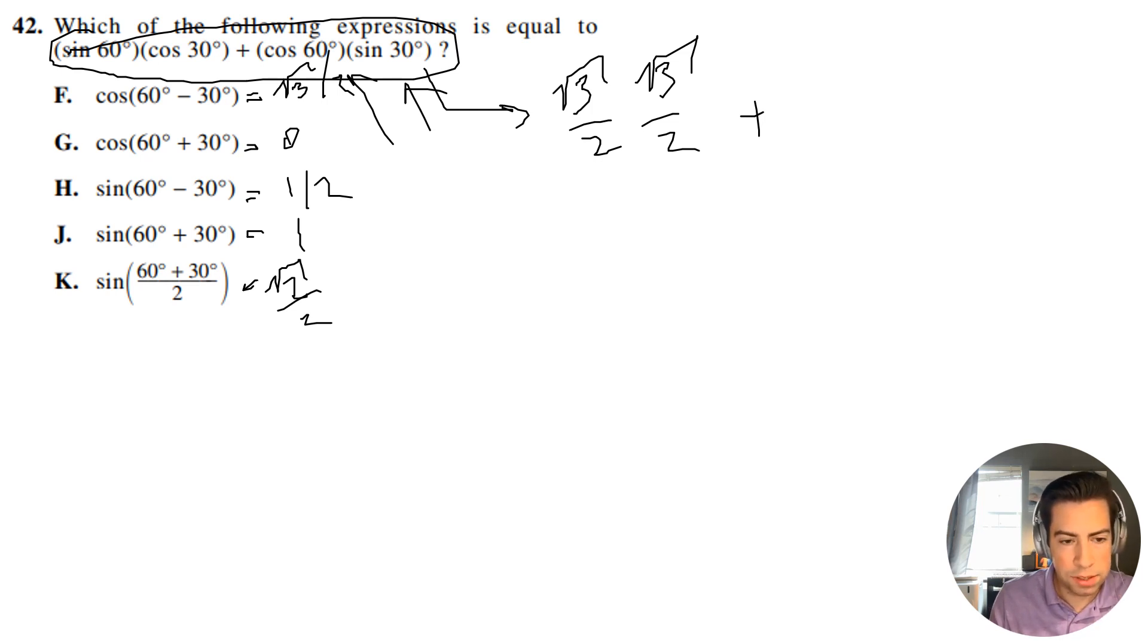So cosine of 60 is going to be 1 half. And again, these are being multiplied together. And then sine of 30 is also 1 half. Okay, so now that we have this, let's go ahead and multiply this out.